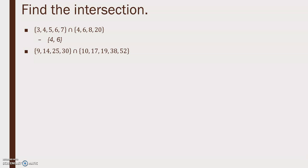{9, 14, 25, 30} intersected with {10, 17, 19, 38, 52} — there are no elements in common in those sets, so the intersection is the empty set. Also, {5, 9, 11} intersected with the empty set is the empty set.